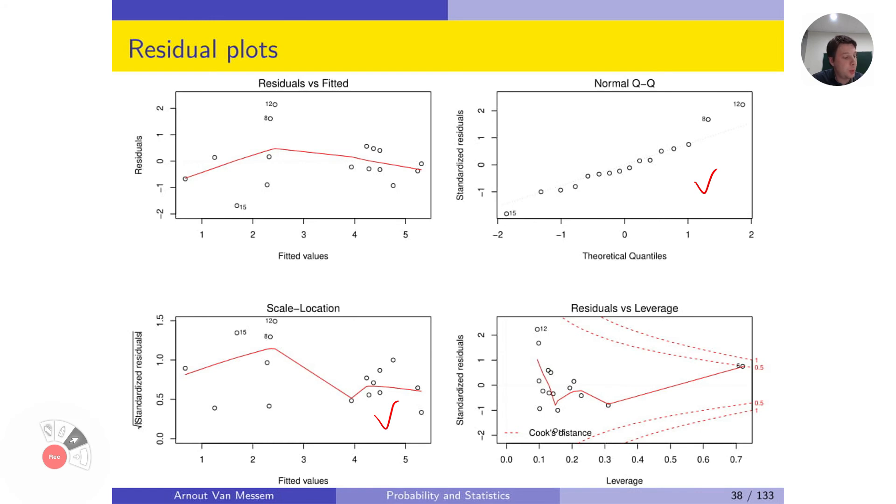And then the third one, the one that caused us to perform a quadratic regression is linearity. We also here see that this is better. The big quadratic association is gone, and this now seems to be fine as well.